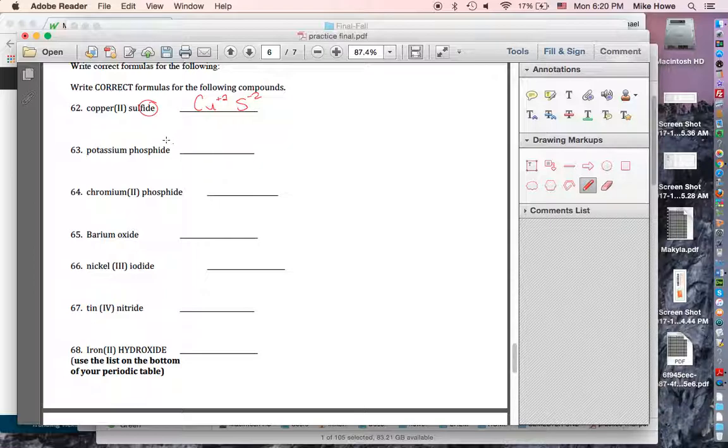You notice that the -ide ending always means the plain element. That's always a big word. Usually means the plain element. Hydroxide is an exception. You have to use the list for that, so we'll get there in a minute.